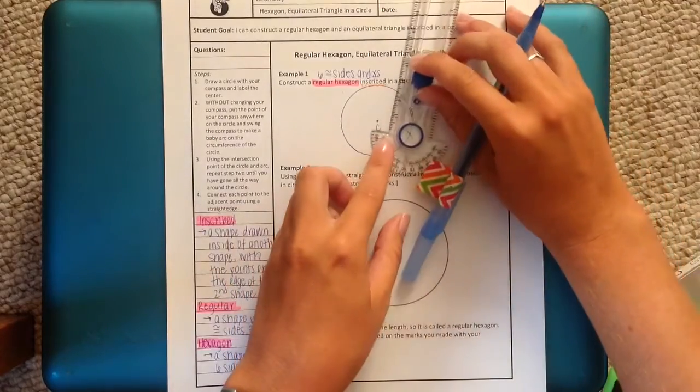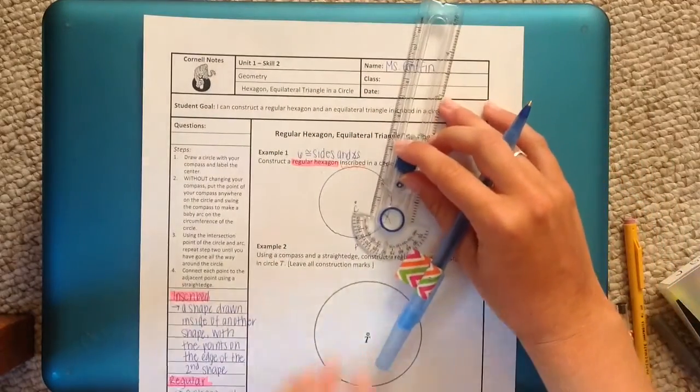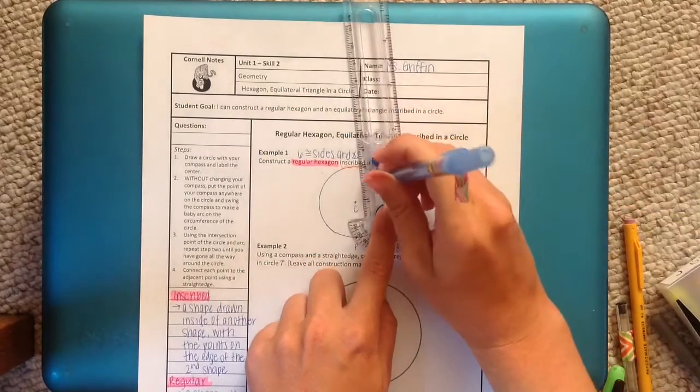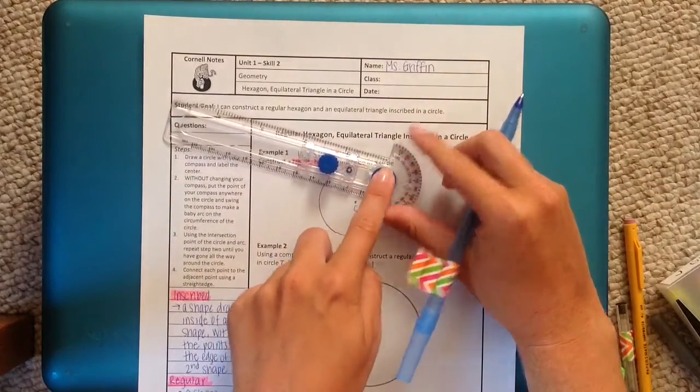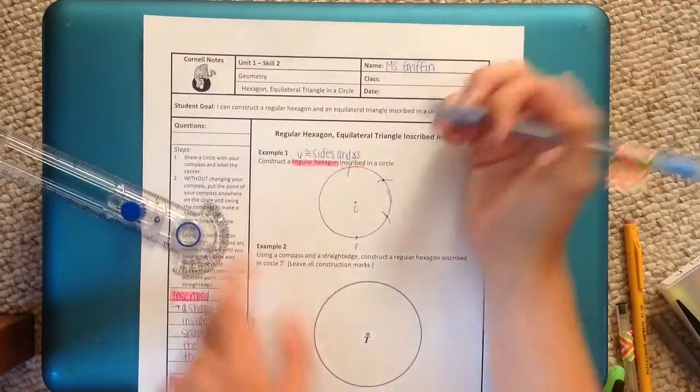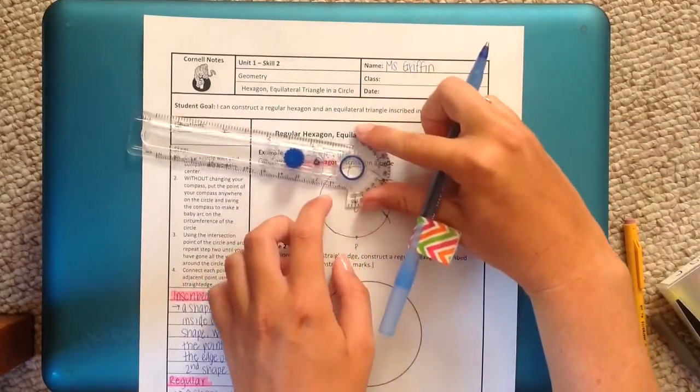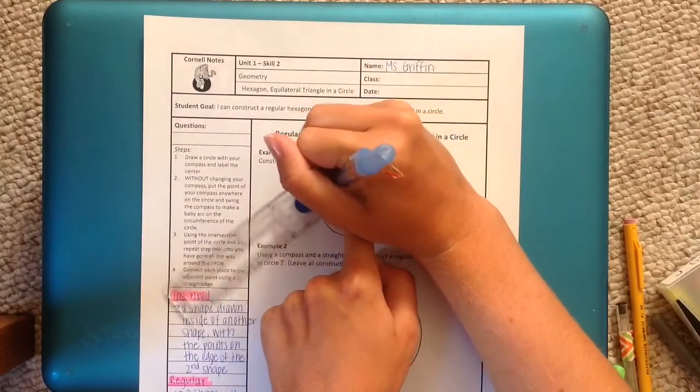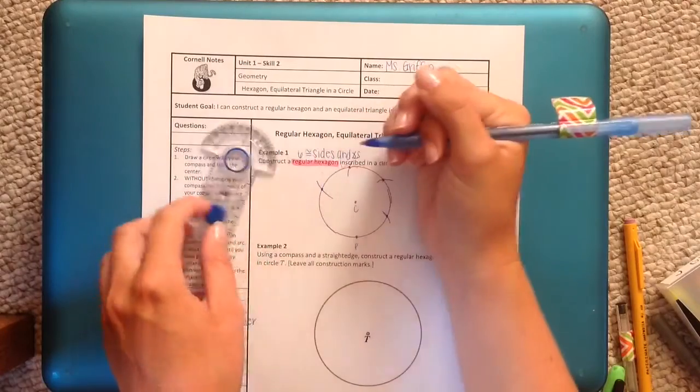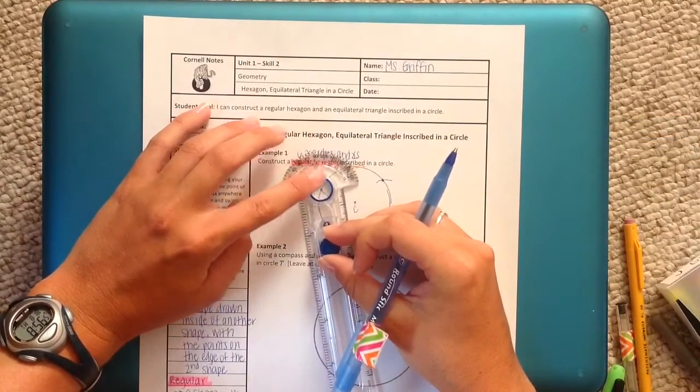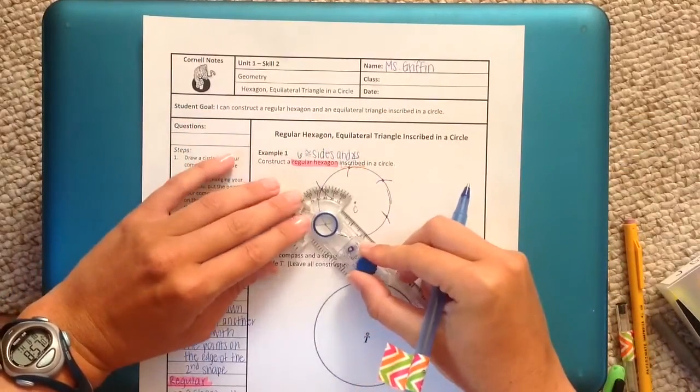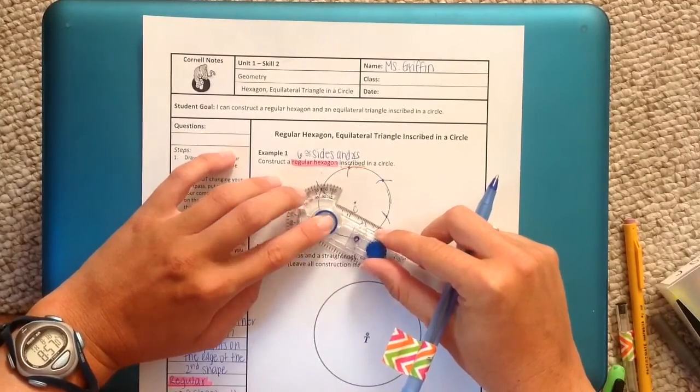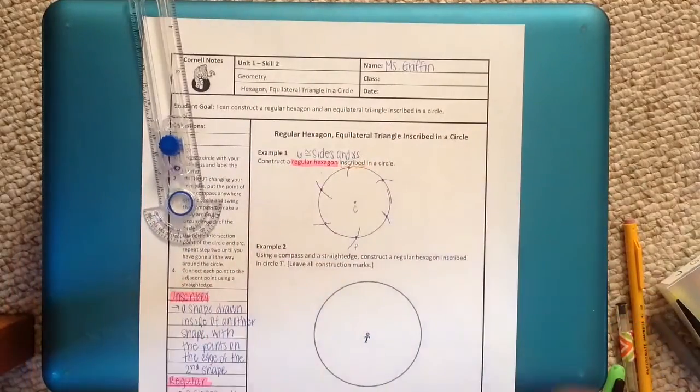From that intersection point, I'm going to pick my compass up. I'm going to put it on that intersection point and swing another baby arc. And I'm going to continue doing this all the way around my circle. Center on the intersection, swing the arc, put the point. Center on the intersection, swing a baby arc, put the point. Because we're making a hexagon, it should have six sides, six angles. That means we need six arcs. With the last one going through point P. Six sides, six arcs, six angles.